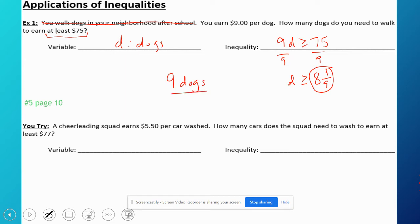The cheerleading squad earns $5.50 per car wash, so that's kind of like your multiplier here. How many cars do they need to wash to earn at least $77? Again, at least means I'm going to be using greater than or equal to. So c is cars washed, and I get $5.50 for every car and it has to be at least $77. So I'm going to multiply that or divide that out.